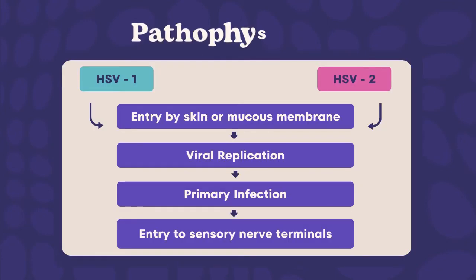The entry of HSV-1 and HSV-2 into the body through the skin involves fusion of the virus with the host cell, penetrating and fusing its envelope with the cell membrane. The viral capsid is released into the cytoplasm, initiating replication in epithelial cells and mucous membranes and causing primary infection. Production of virions causes vesicular lesions in the epithelium. The virus spreads to adjacent sensory neurons and, through retrograde transport, is carried along axons into the sensory ganglia. Approximately three weeks after exposure, the epithelial infection resolves, and the virus establishes a latent infection in the sensory ganglia.